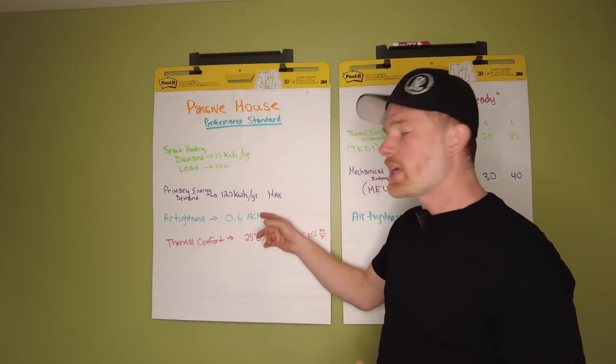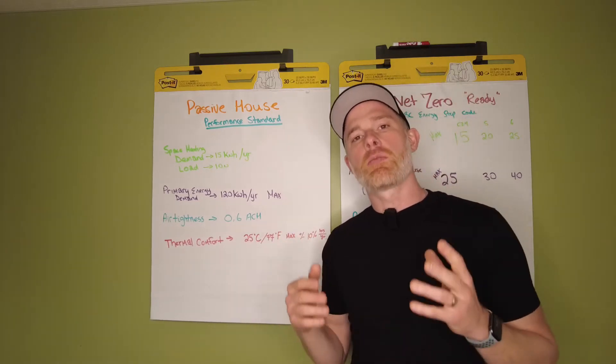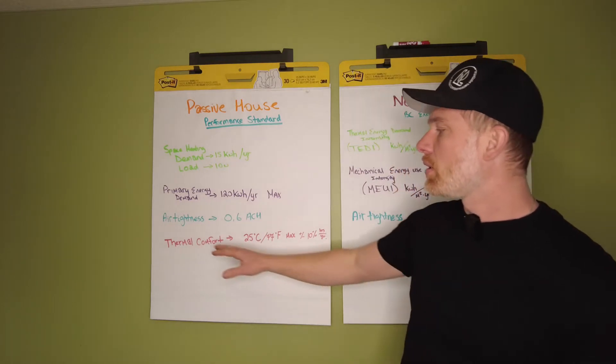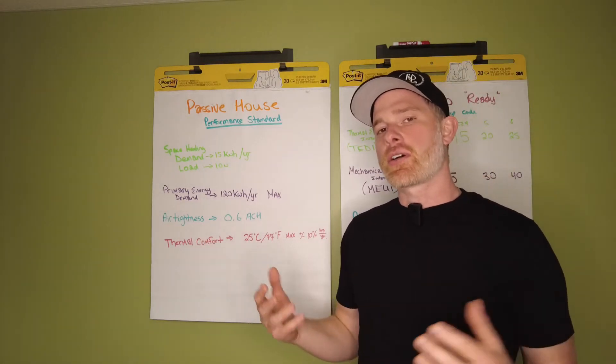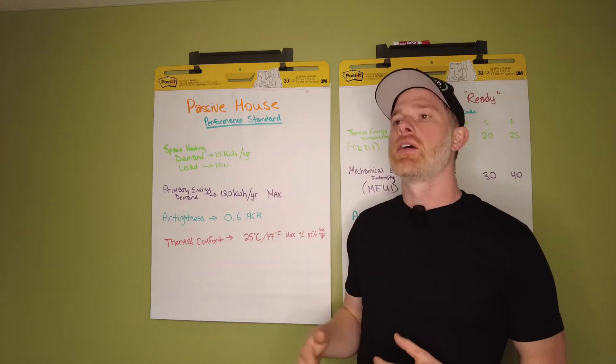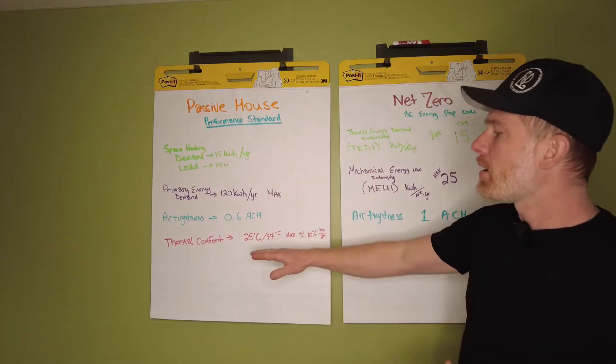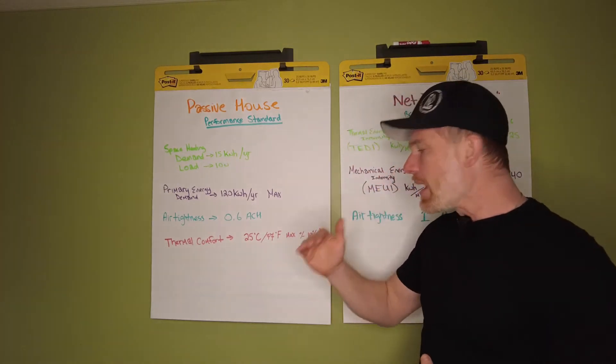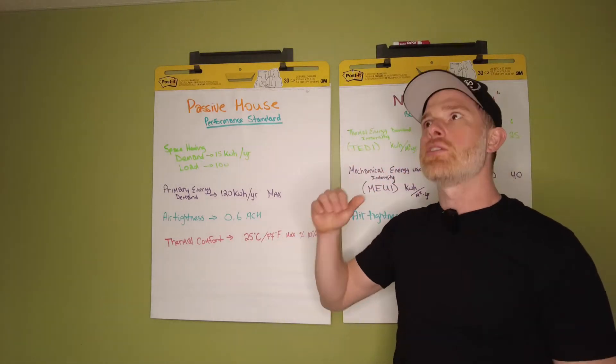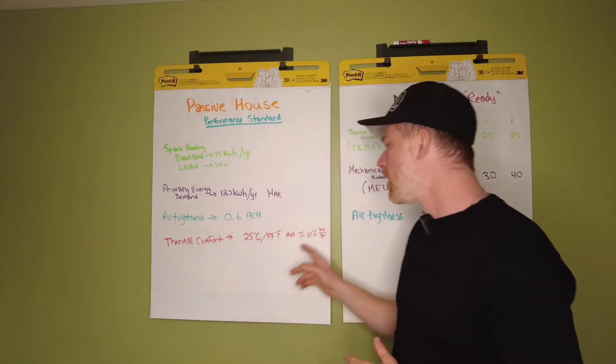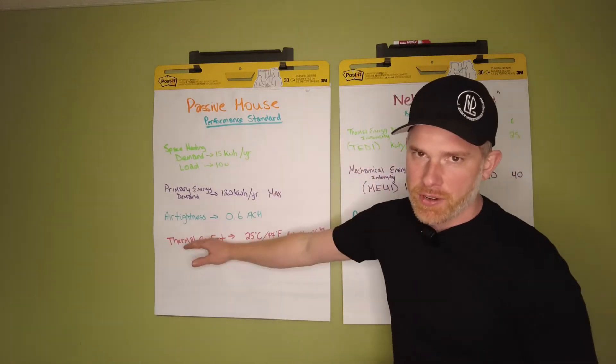As far as air tightness goes, they set the gold standard at 0.6 air changes per hour, which is absolutely achievable. They also include thermal comfort criteria that says your house isn't allowed to overheat on the hottest days of the year. 25 degrees Celsius or 77 degrees Fahrenheit is the maximum—you can only break that 10 percent of the hours per year available.